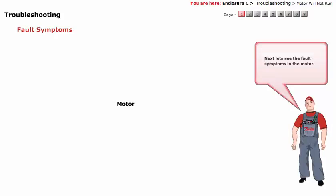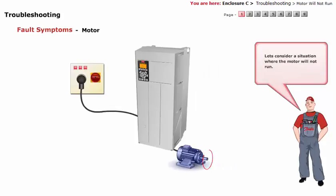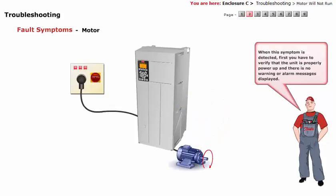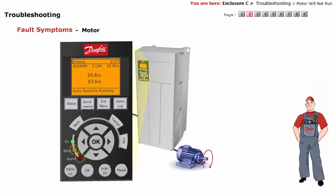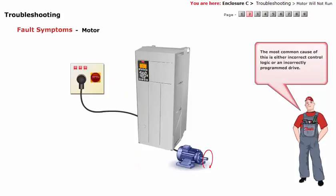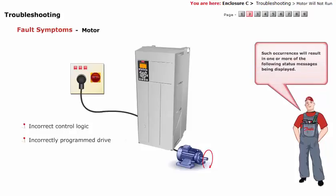Next, let's see the fault symptoms in the motor. Let's consider a situation where the motor will not run. When the symptom is detected, first verify that the unit is properly powered up and there are no warning or alarm messages displayed. The most common cause is either incorrect control logic or an incorrectly programmed drive. Such occurrences will result in one or more of the following status messages being displayed.